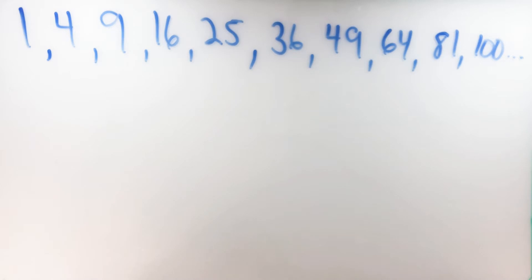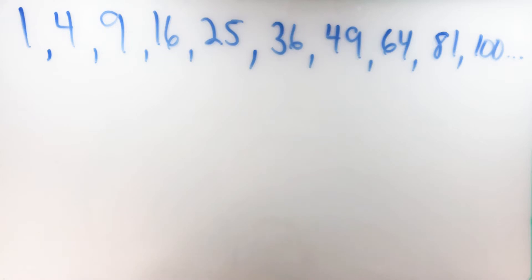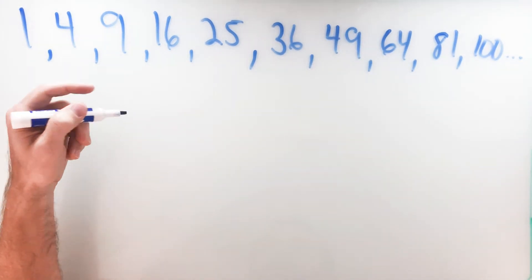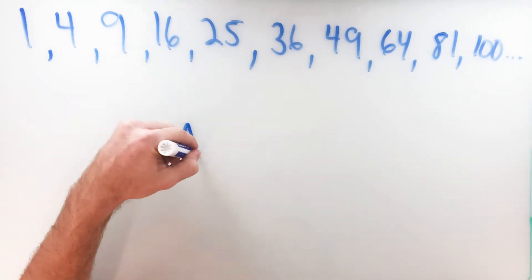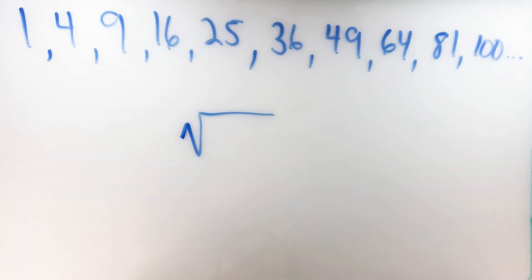Just like with most mathematical operations, nearly every mathematical operation has an inverse — a way to go backwards or to get back to where you started — and squares are no exception. There's an inverse to a square, and you may have seen this before as a square root or a radical.